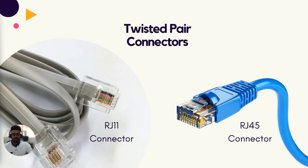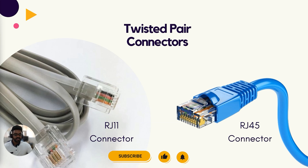Another less common connector used with twisted pair cabling is the RJ11 connector. With only four pins, it looks like a miniature RJ45 connector. RJ11 connectors are typically used with Cat1 twisted pair cabling, which is the cabling used for telephone communications. Both RJ11 and RJ45 connectors are attached to cables using a special crimping tool.